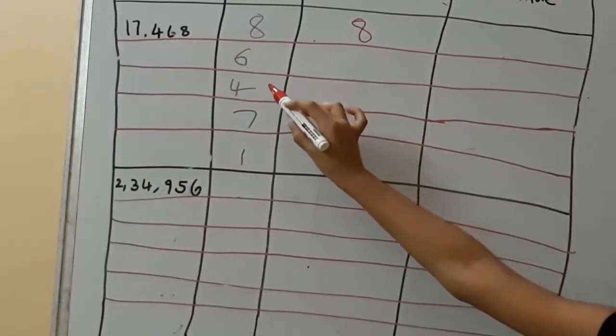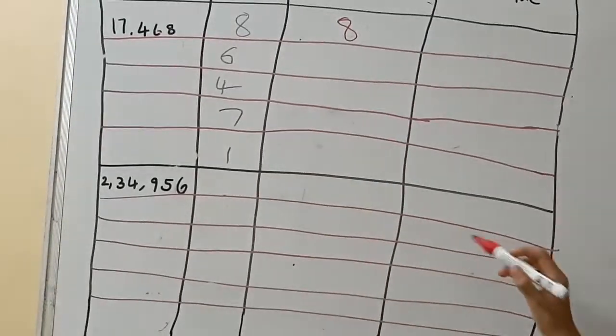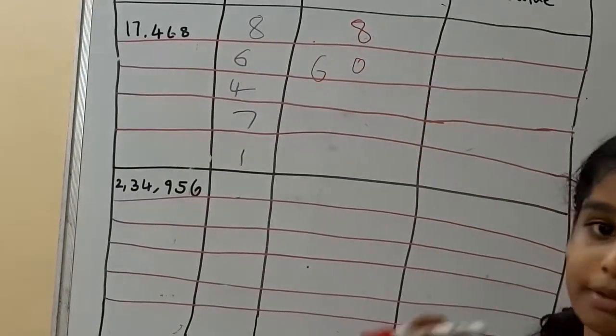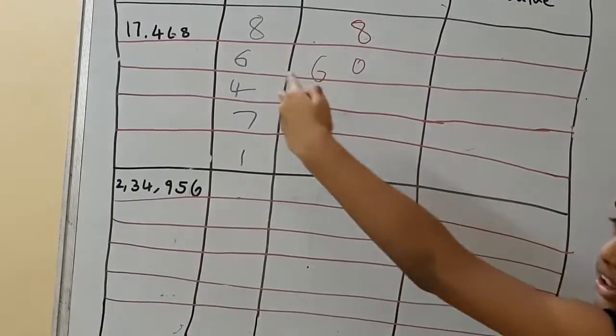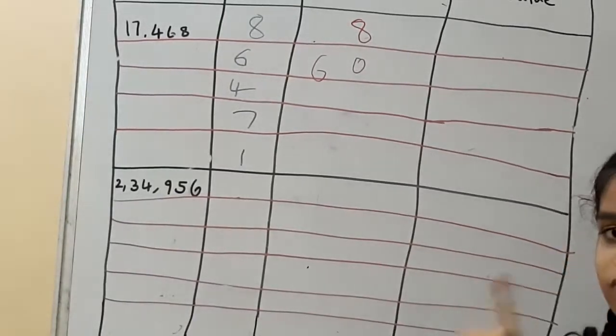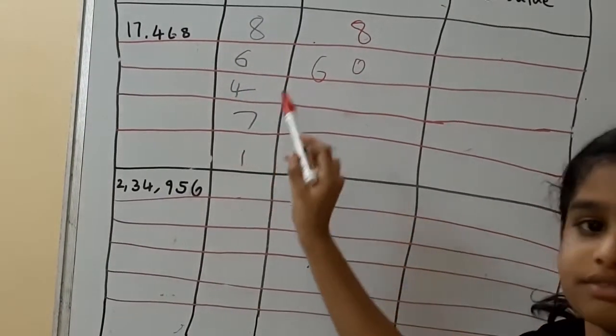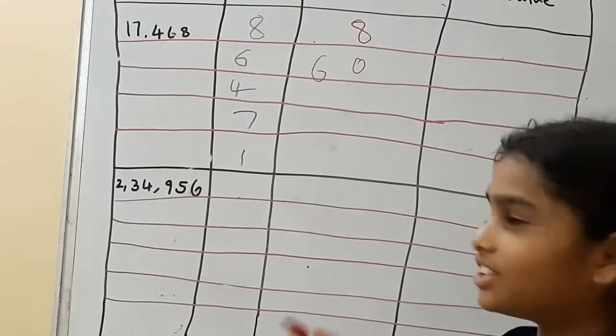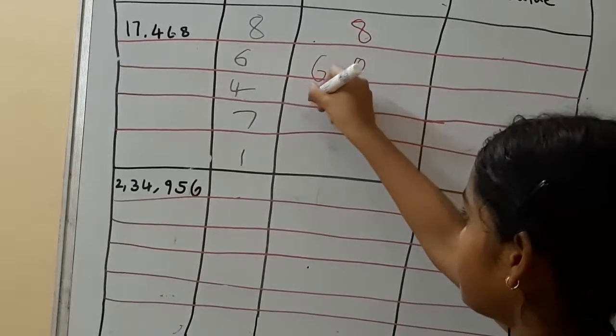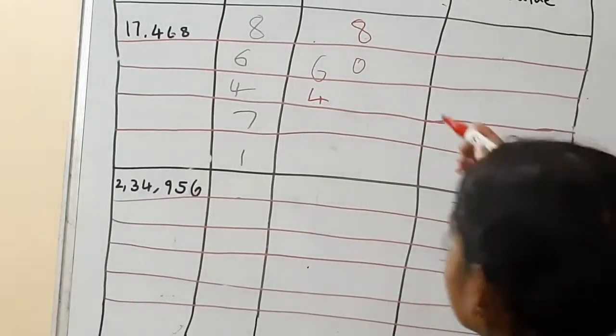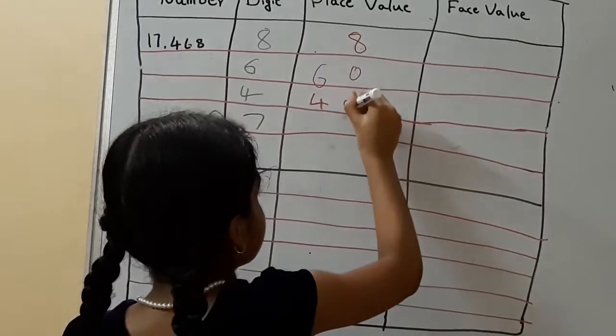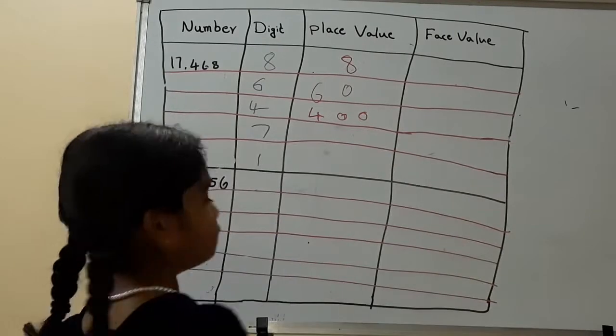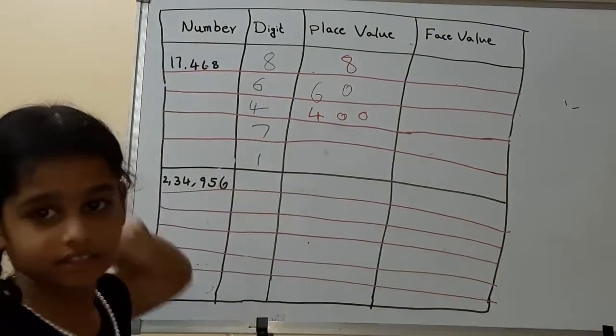And what is the base value of 6? It is 10's, so now we will write 6 and one 0 because it is more than 1's. And what is the base value of 4? It is in 100's place, so we will write 4 and we keep two 0's because it is more than 100.